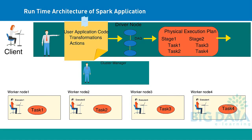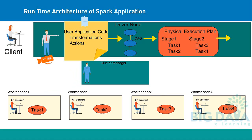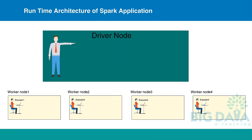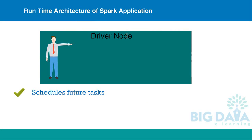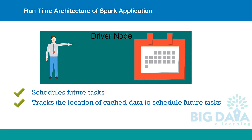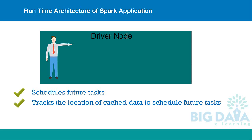Executors start executing the tasks assigned by the driver program. At any point of time when the application is running, the driver program will monitor the set of executors that run. The driver will also schedule future tasks in appropriate locations based on data placement. The user program may cache data in certain locations using the cache method or persist method. The driver tracks the location of cached data and uses it to schedule future tasks that access that data.